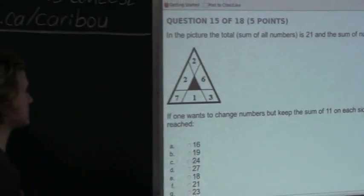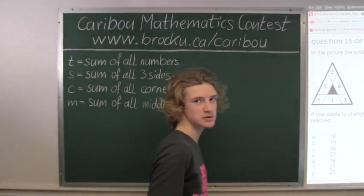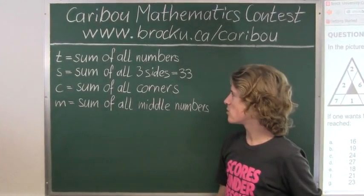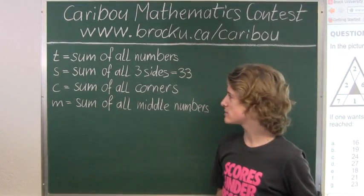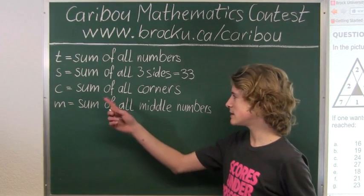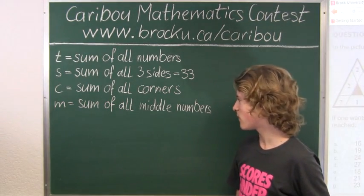So now what we want to do is obtain all the possible totals, so we will now introduce these four variables. t equals the total of all numbers, s equals the sum of all three sides which we know is 33, c equals the sum of all corners, and m equals the sum of all middle numbers.